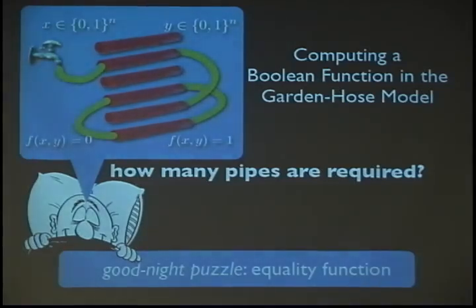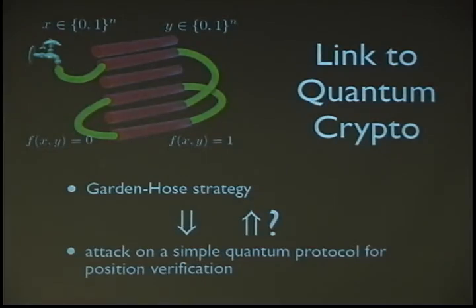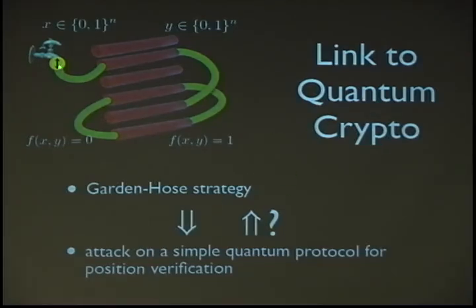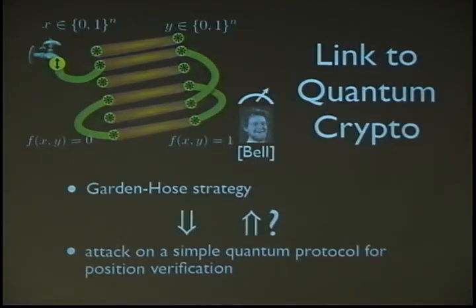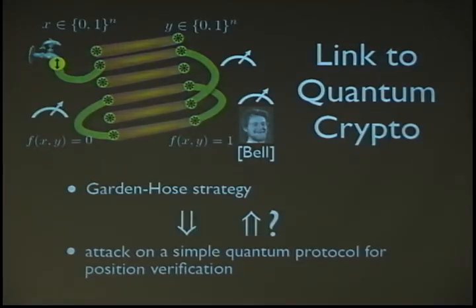So why am I telling you all this? Where's the cryptography? Well, it turns out that when you think about these kinds of questions, you're actually thinking about a particular attack on a quantum cryptographic protocol. A strategy to compute a function in this garden hose model implies an attack on a simple quantum protocol for position verification. In this protocol, Alice has a qubit, and this qubit should end up either on her side or on Bob's side. These pipes correspond to EPR pairs — entangled photons. By wiring up these pipes, you're actually doing Bell measurements on these EPR pairs. All these pieces of garden hose correspond to Bell measurements, and the final measurement is actually teleporting this qubit through the system of entanglement to either one side or the other.